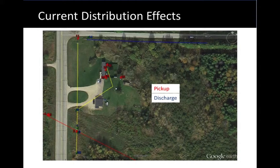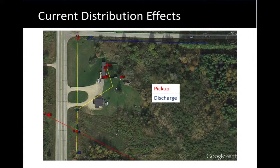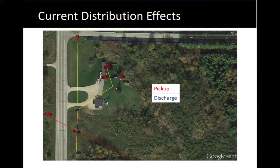Here's another image that helps show the story. The power line neutral and the customer neutral that are bonded together are shown in yellow. The impressed current anode bed has current discharge off of it — shown in blue at the top of the image. The pipeline is receiving current, shown in red, but there are also other points in red and blue that represent pickup and discharge in this image as well.